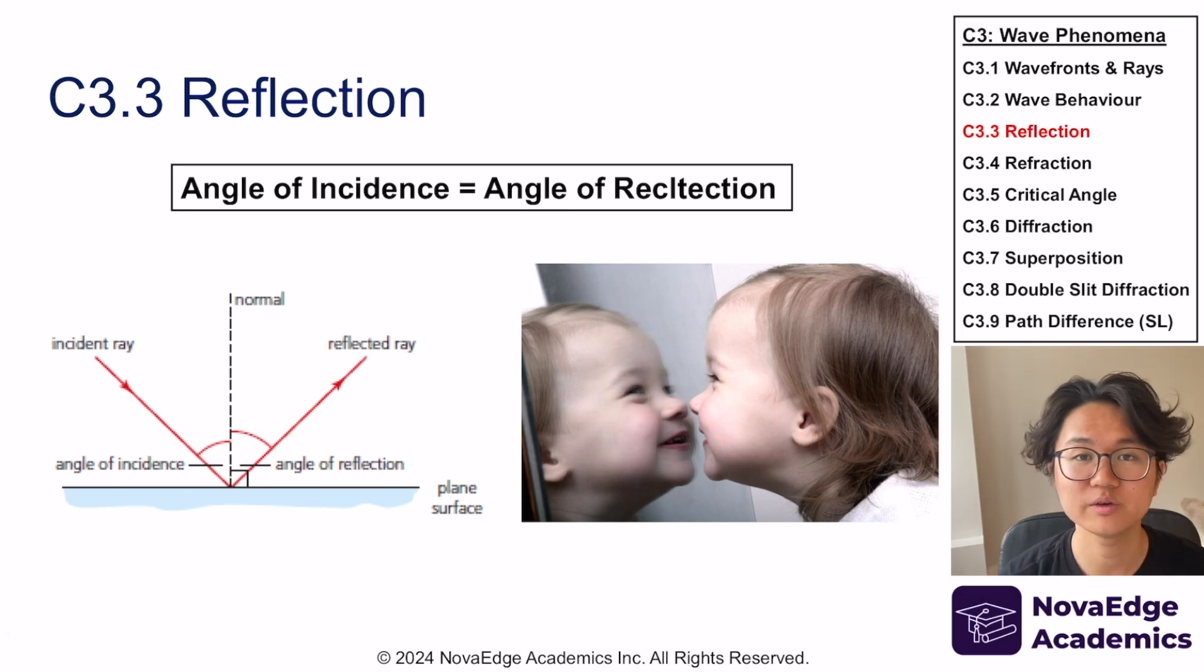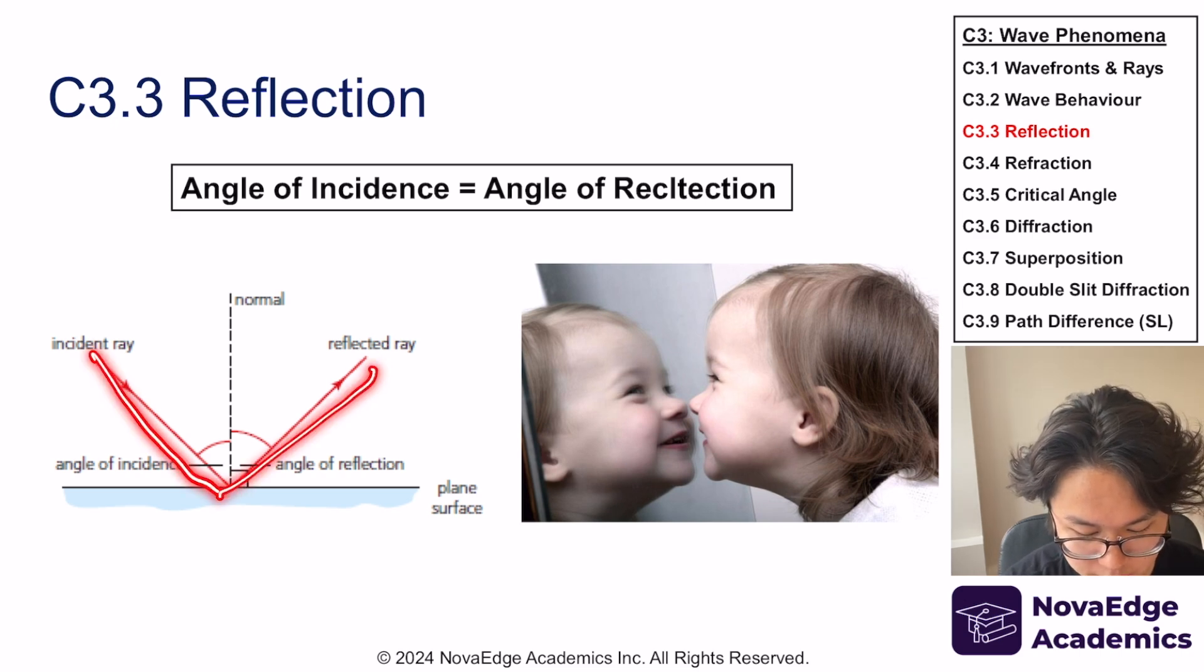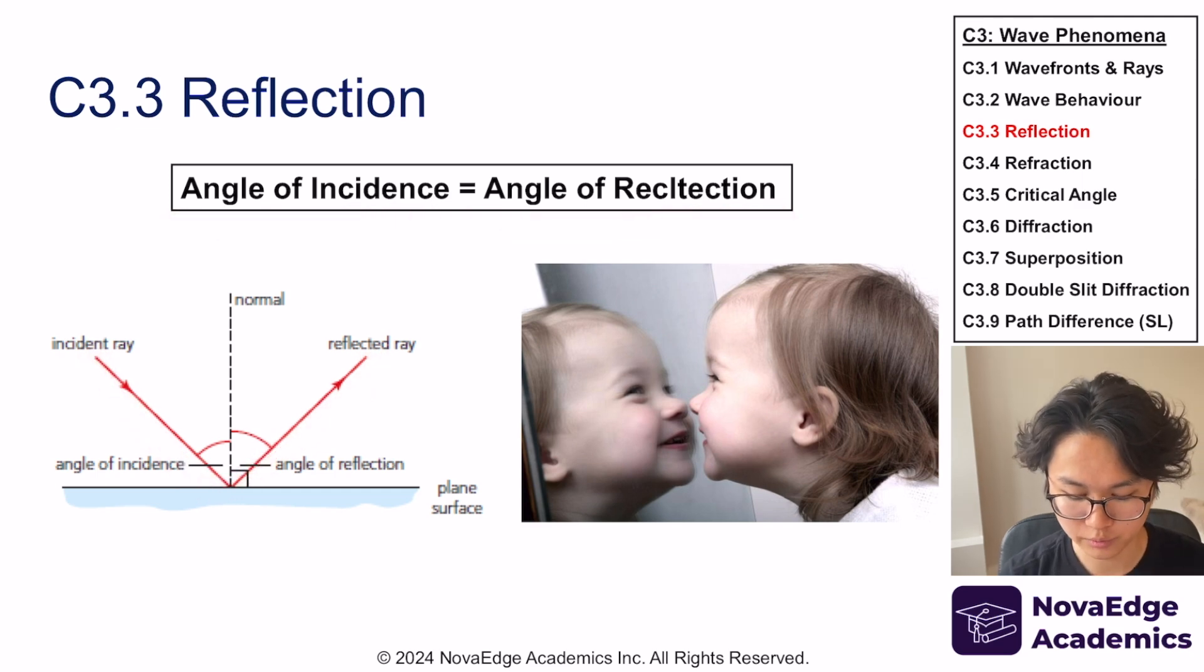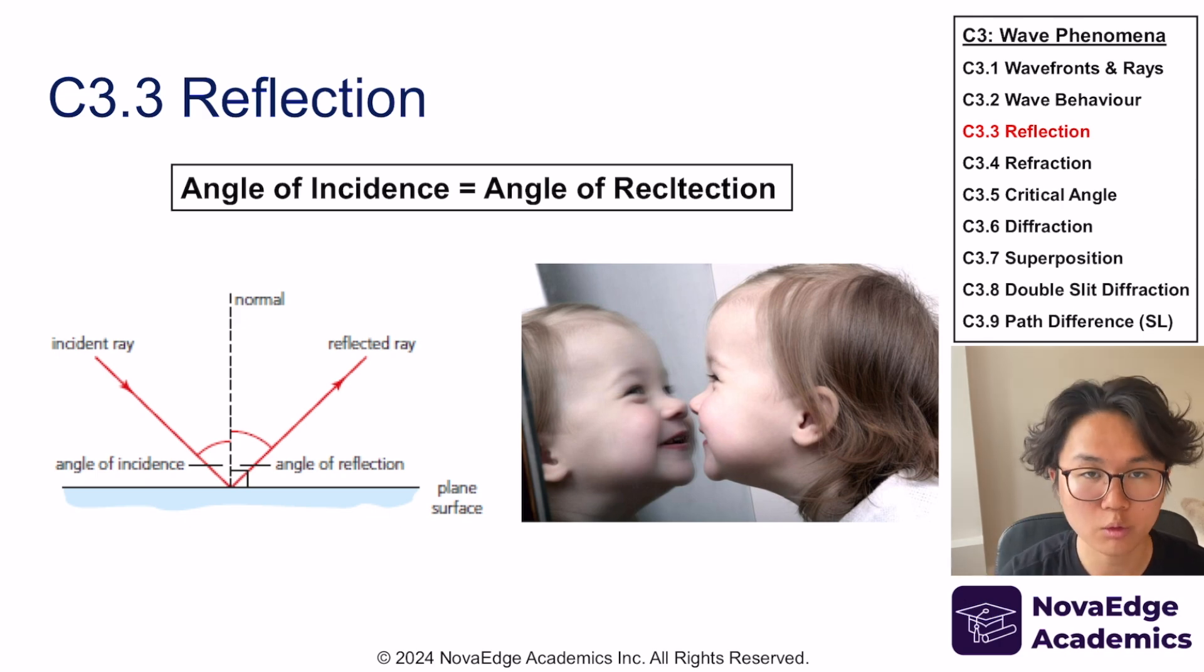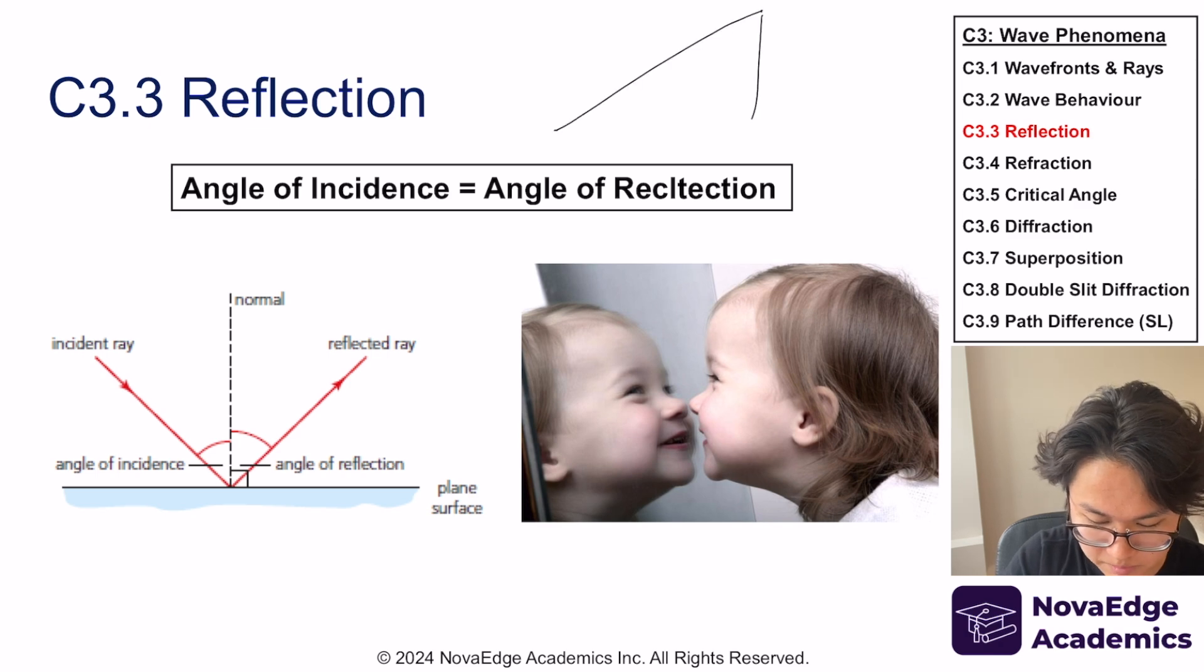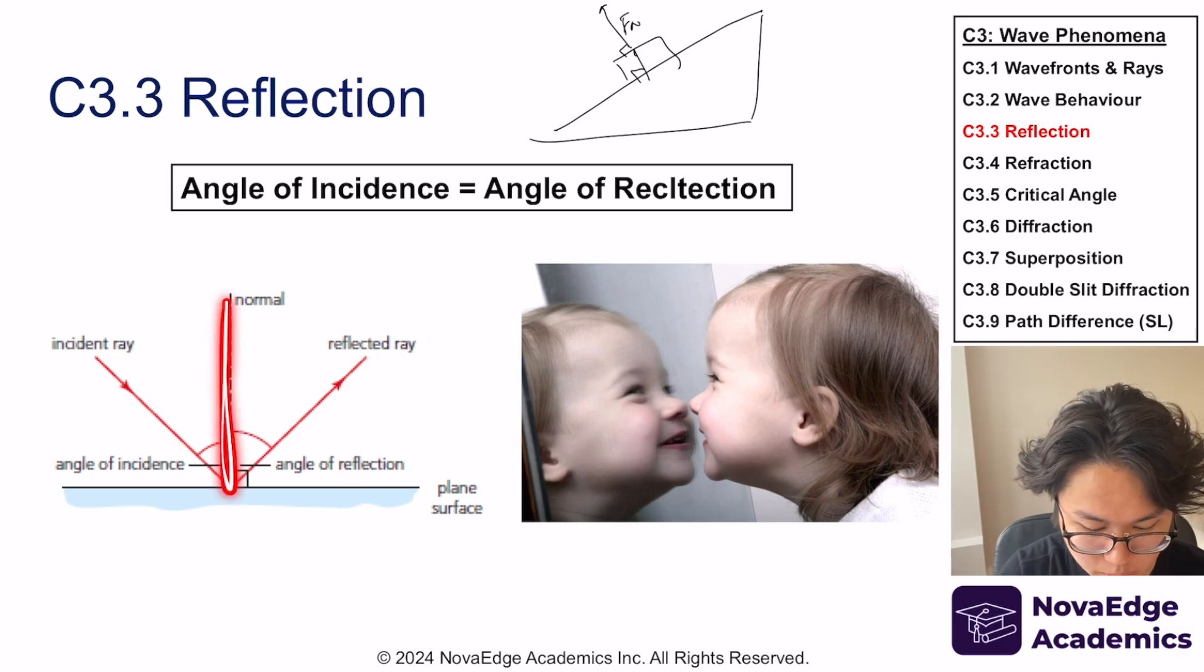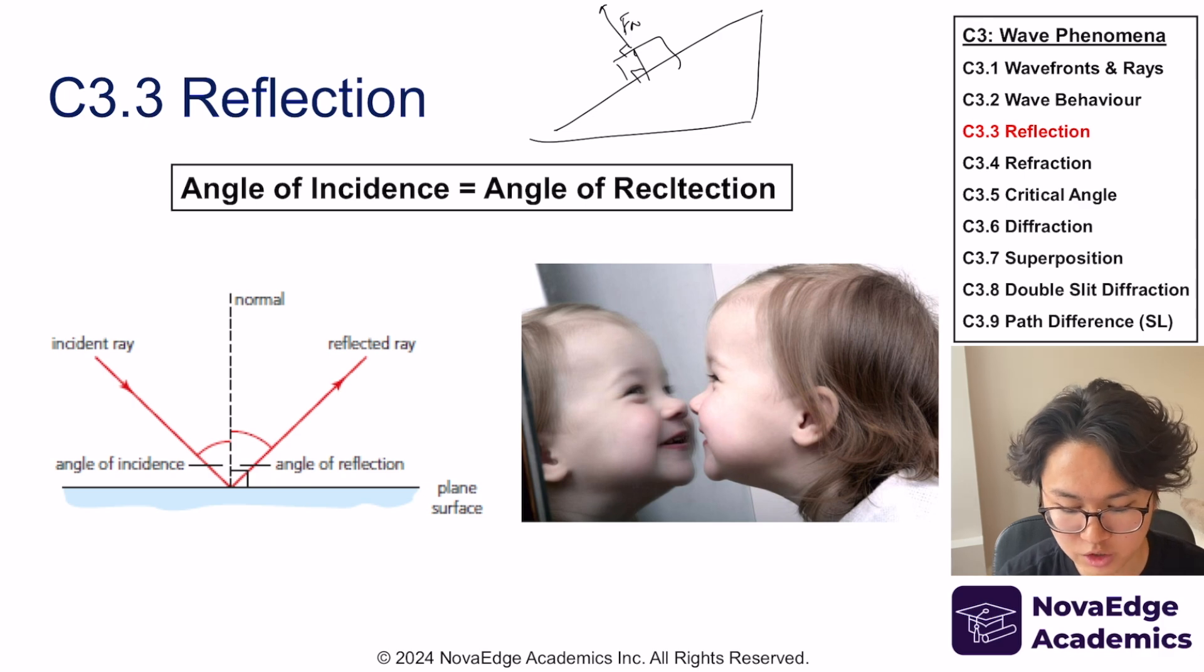So let's get right into reflection. I'm sure you've already covered this in your previous high school physics before the IB. The incident ray and the reflective ray, they have the same angle of incidence and angle of reflection. The angle is measured from the normal line. What is a normal line? It's the perpendicular line from the surface. And I hope you hear the familiarity because we have normal force. Normal force was always perpendicular to the surface.